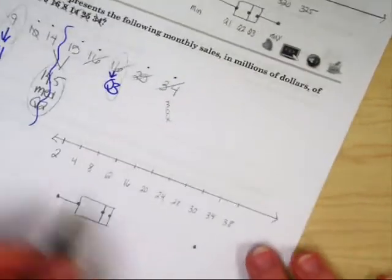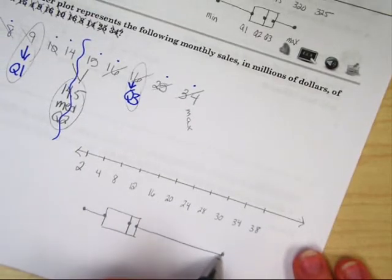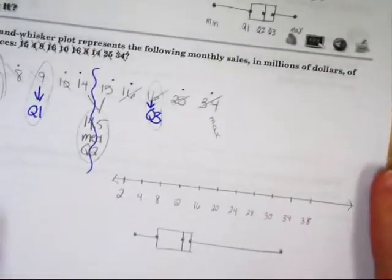And you put a straight line down at the median. Last, you connect the whiskers. And now you have your box-and-whisker plot.